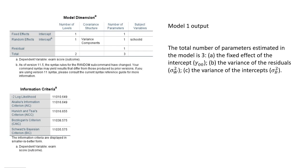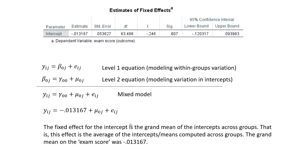Looking at our output, first notice the model dimension table containing the number of parameters being estimated. For our first model, we have three parameters: the fixed effect associated with the intercept, the variance for the intercepts as a random effect, and the level 1 residual variance. Because we don't have any predictor variables, the estimates of fixed effects gives us only the estimate for the intercept, which is the grand mean of the intercepts across groups — negative 0.013167.